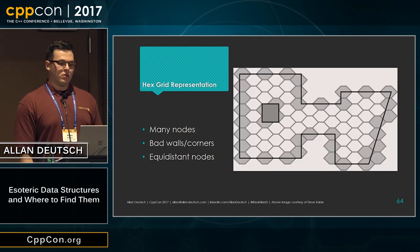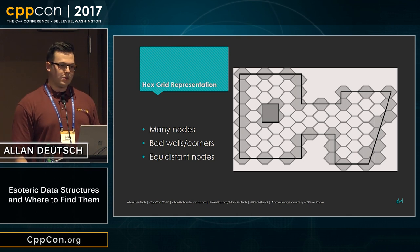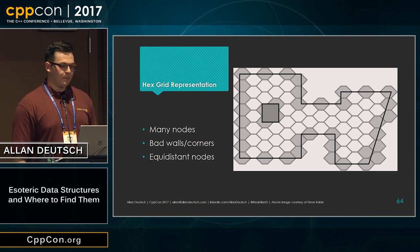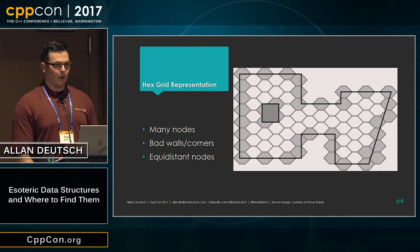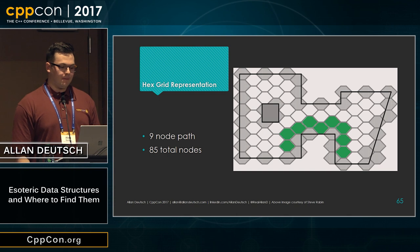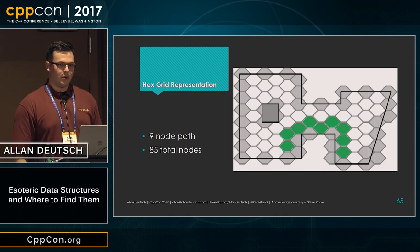If we look at a hex grid representation, there are also a lot of nodes, and it doesn't handle walls and corners very well — but at least this one has equidistant nodes, so even if you're moving diagonally, the cost for moving from one node to the next is equal. It also has some issues with not perfectly representing the search space. If we run that same search, we find that nine nodes are used — a lot better than before — and 85 total nodes is also quite a bit better.